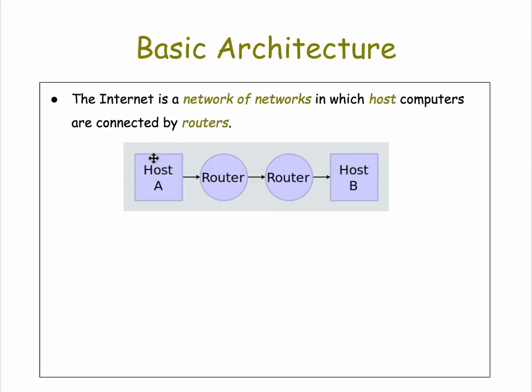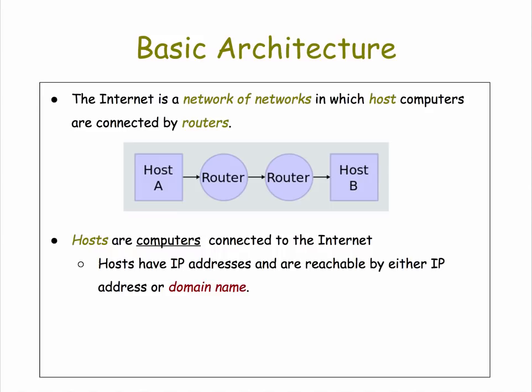The Internet uses a basic end-to-end architecture. Messages are sent from a host A to a host B, but messages have to travel through one or more routers, depending on where these two hosts are located. Hosts are simply computers that are connected to the Internet — that could mean your laptop, smartphone, or tablet. Hosts are given IP addresses, or Internet Protocol addresses, and they're reachable either by their IP address or by their domain name. For example, the host trincol.edu, the main computer for Trinity College, has this domain name and this IP address.